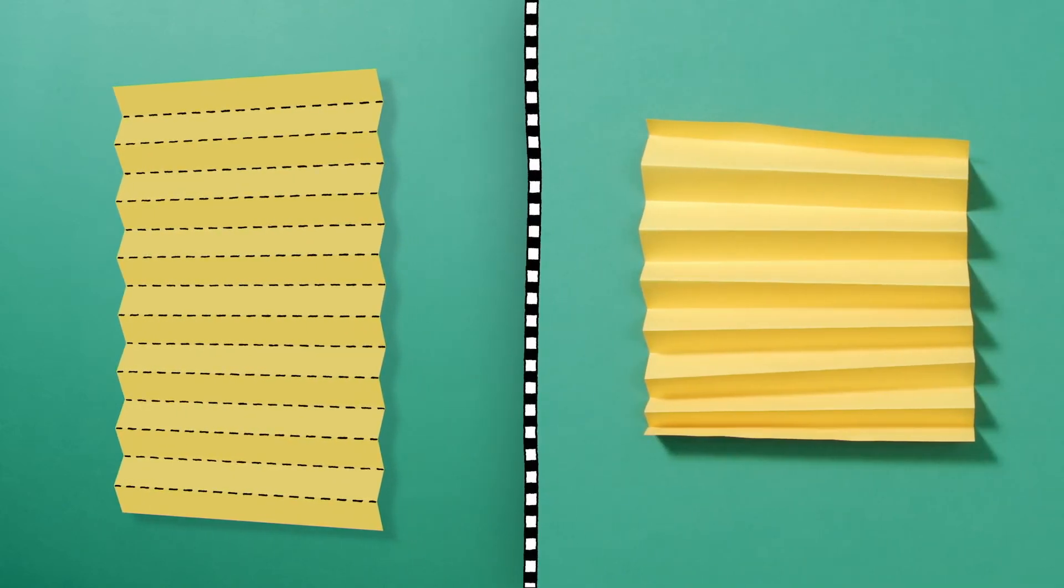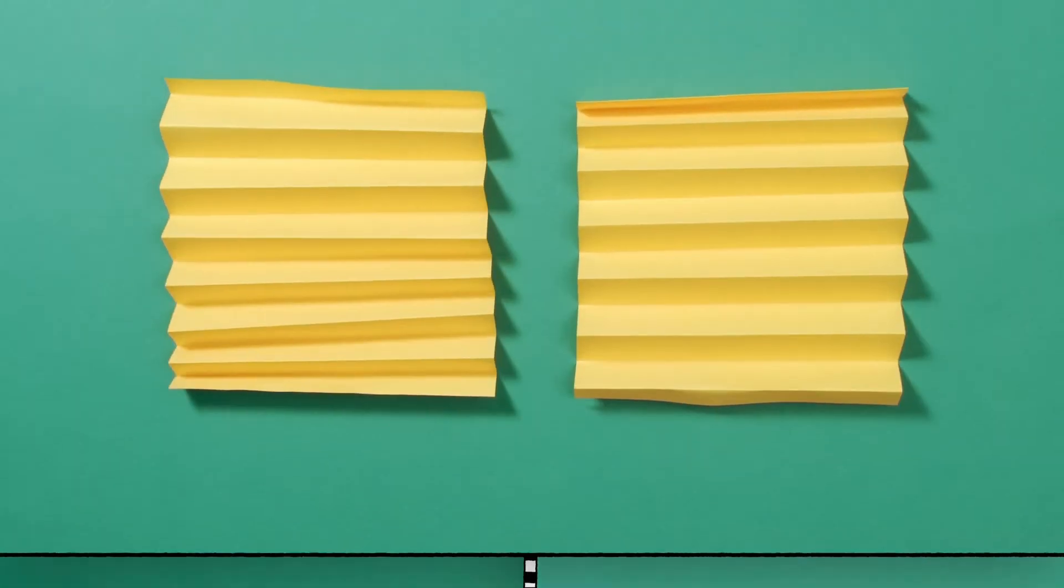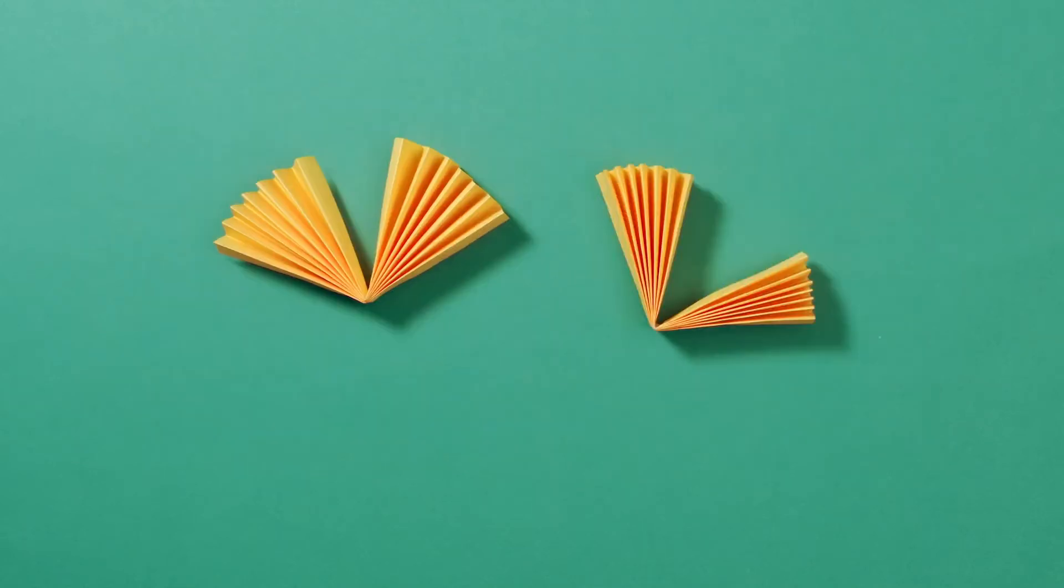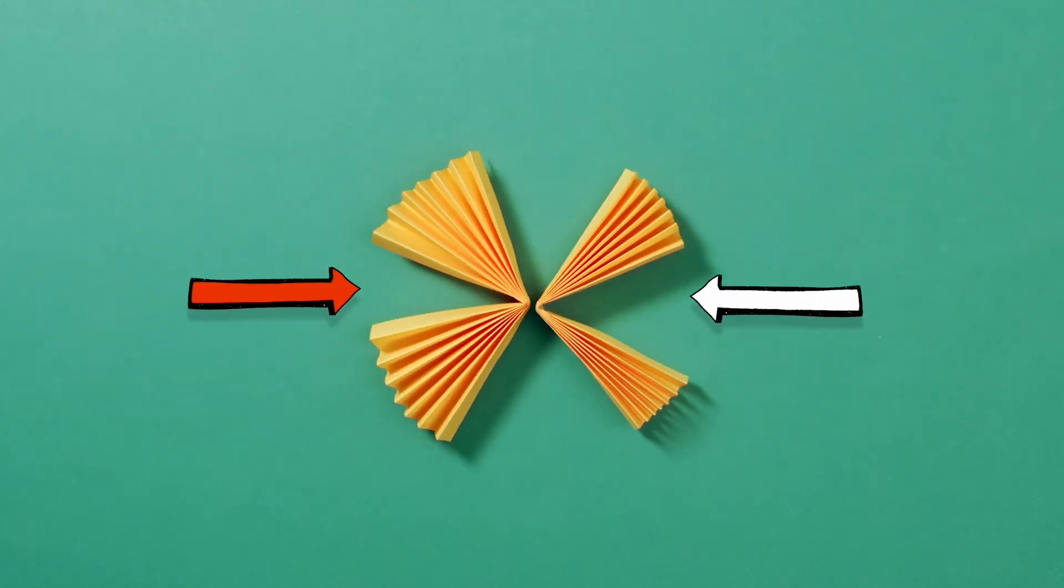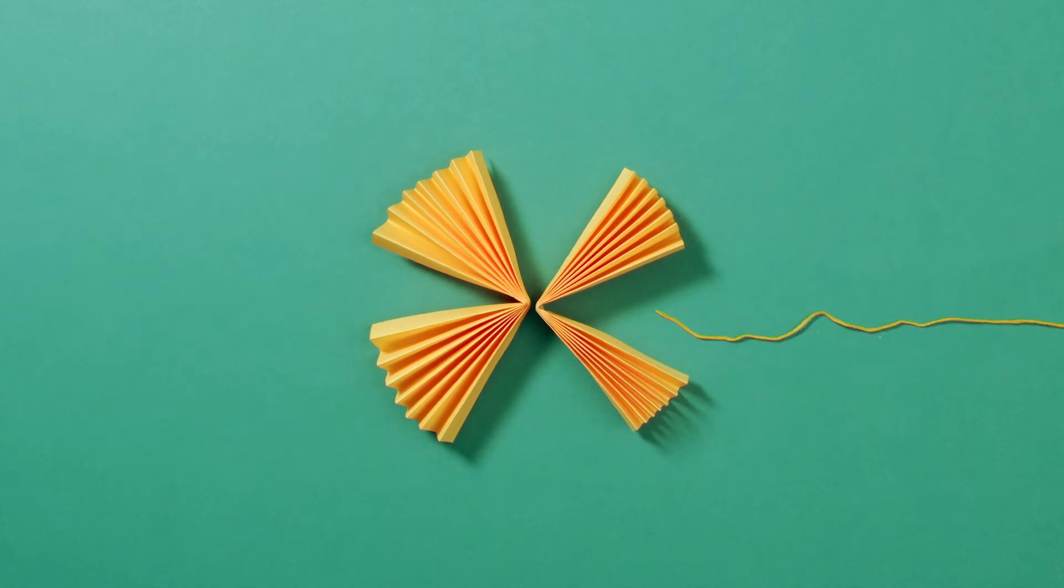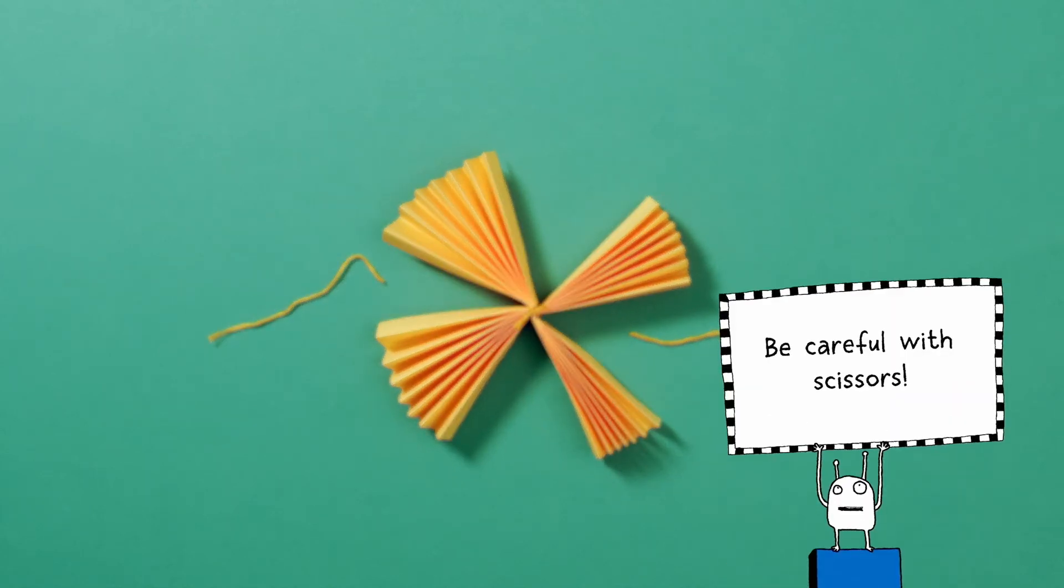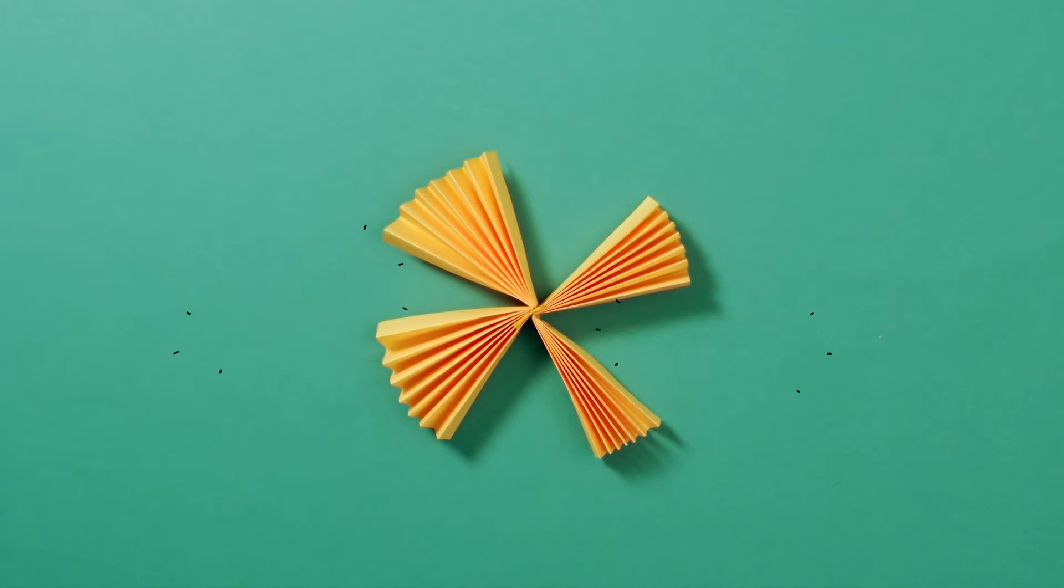When you unfold it, it should look like this. Do the same with the other piece of coloured paper. Now you've got two crinkly strips. Pinch and fold in the middle, hold them together like this, and tie them up with string. Cut off any extra string—be careful with scissors—and use the glue stick to glue the inner edges of the bows together to make the circle.